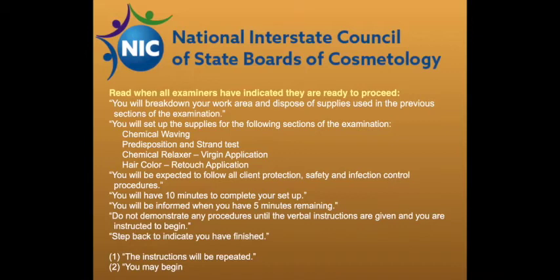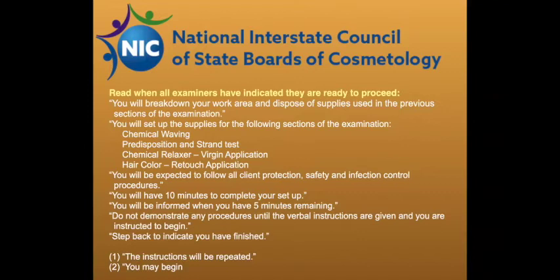You will break down your work area and dispose of supplies used in the previous sections. You will set up the supplies for the following sections of the examination: chemical waving, predisposition and strand test, chemical relaxer virgin application, and hair color retouch application. Follow all client protection, safety, and infection control procedures. You have 10 minutes to complete this setup; you will be informed when you have five minutes remaining. Do not demonstrate any procedures until instructed to begin. Step back to indicate that you have finished.